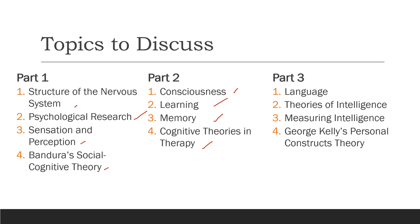In part three, we're going to talk about language, which is very important, as well as intelligence. I've split the discussion into two parts: first, we're going to talk about the theories, and then we're going to talk about the measurement of intelligence and the issues related to measurement. Our special topic for the third part shall be George Kelly's Personal Constructs Theory — a personal favorite of mine when it comes to the cognitive understanding of personality.